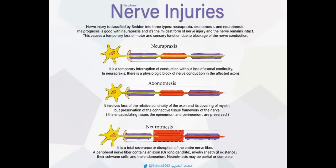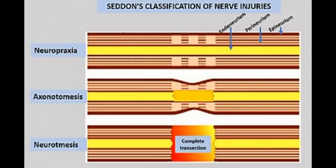Nerve injuries are classified into three types: neuropraxia, axonotmesis, and neurotmesis. You can see the picture of these: the first one includes a red and yellow portion, the second one contains only the middle red portion, and the third one contains a bigger red portion compared to the first two.